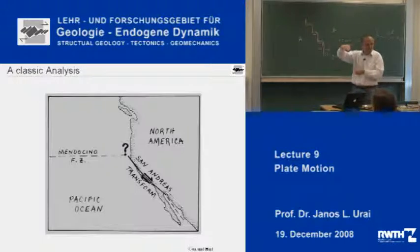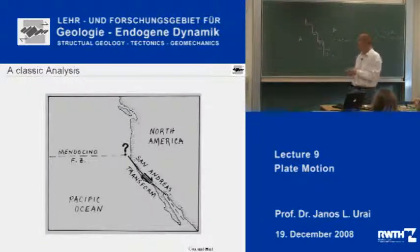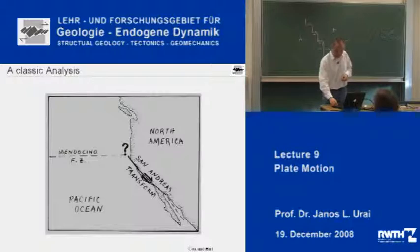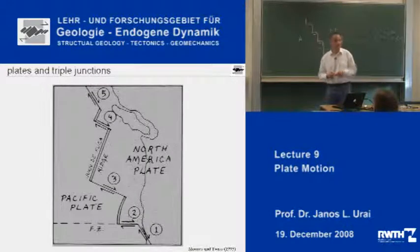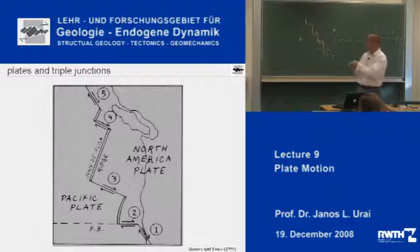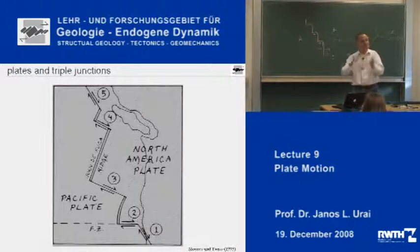It wasn't clear how the Pacific plate could make this big change in direction and continue, because everything would fall apart if that would be a curved plate boundary. So it was a big mystery of what happens here. People knew about the Pacific plate, but not so much was known about this part. What Atwater proposed is that this little place here was, in fact, a small microplate — the remnant of a plate which used to be much, much bigger, but which was being subducted and getting smaller and smaller because the ridge was getting closer and closer to the North American plate.